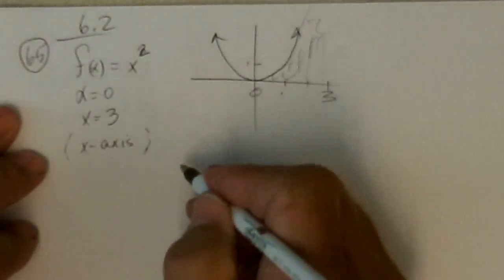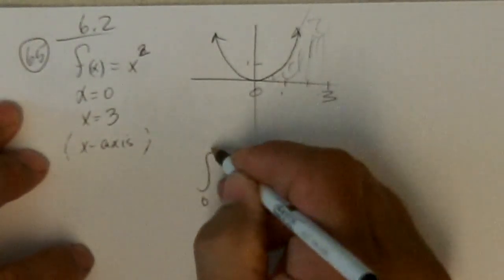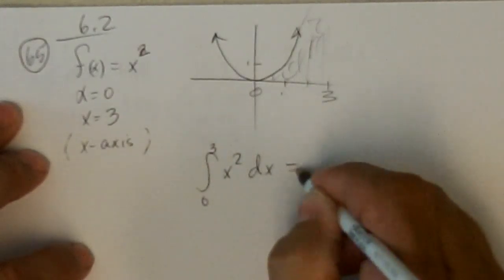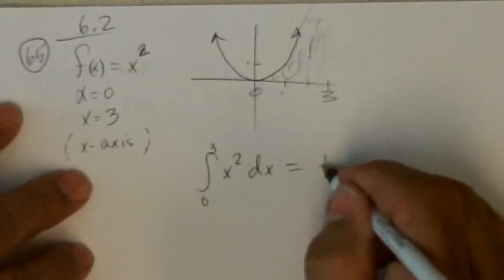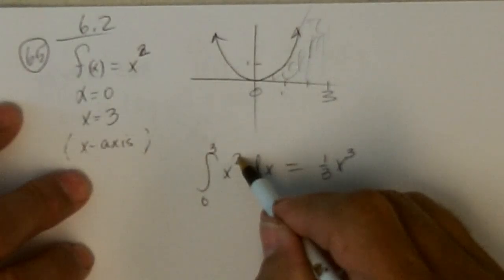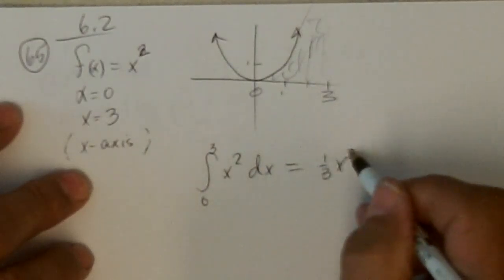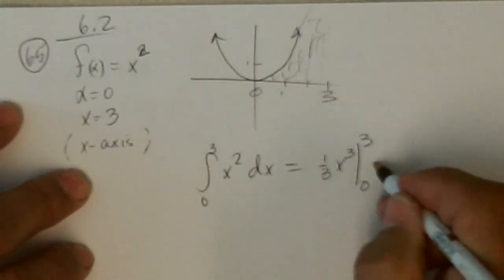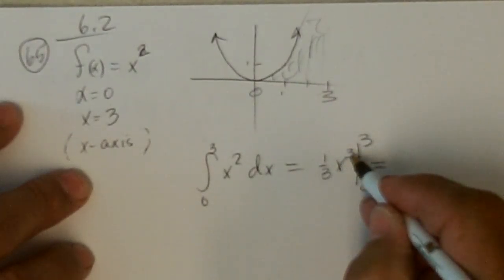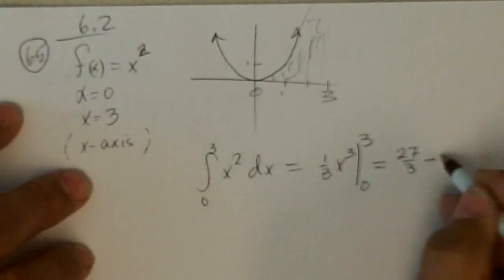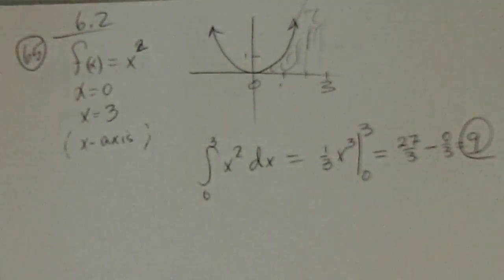Okay, so the area between 0 and 3 of x squared dx is simply 1 third x to the third, because we take 2, add 1 to it, we get 3, and we divide by that, and take it to that power, and we have to find it between 0 and 3. So we plug 3 in, we get 27 thirds minus 0 thirds, which is 9, and that's 65.